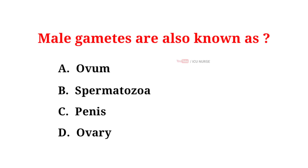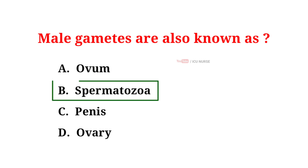Male gametes are also known as: A. Ovum. B. Spermatozoa. C. Penis. D. Ovary. The correct answer is B: Spermatozoa.